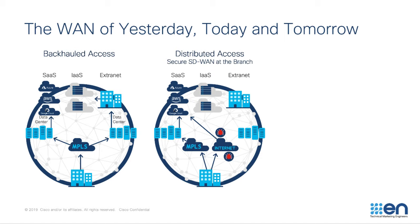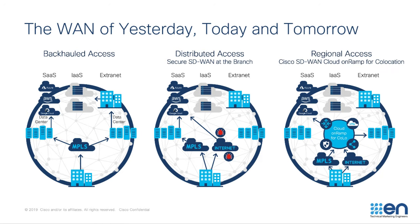But some organizations need more, and in fact these organizations have asked how they can combine the benefits of both access models. With centralized access, it was easy to control and optimize outbound internet traffic — it was just inefficient. With distributed access, the traffic is more efficient, but it's a bit harder to control and optimize.